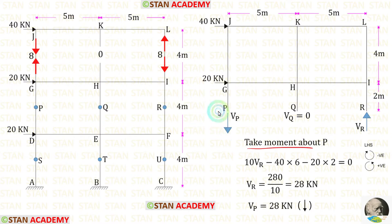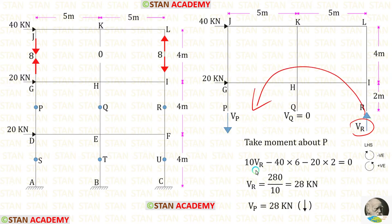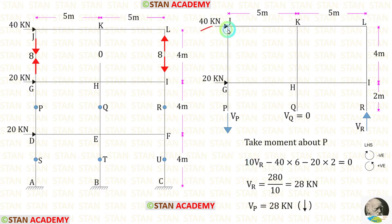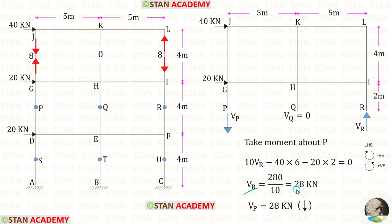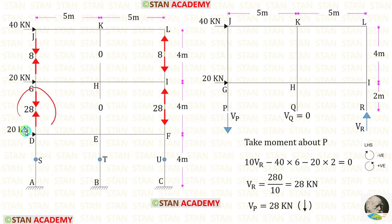Now let us take moment about P. This force is acting in the anti-clockwise direction, so that will be positive and the distance is 10, giving 10·VR. The 40 kN is acting in the clockwise direction, so that will be negative and the distance is 6. The 20 kN is also acting in the clockwise direction, so that is also negative and the distance is 2. Finally, for VR we are getting 28 kN. We know that VP and VR will have the same value, but VP will be acting downwards. Let us apply the axial forces.